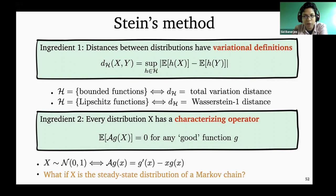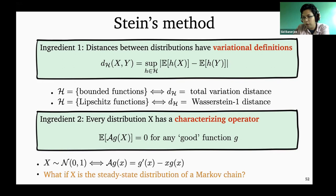In some sense, this is like a signature for a normal distribution. If you had a distribution and didn't know it was normal, and then threw it into this operator for any function G and saw that the result was zero, then you would know you have a normal distribution. What people usually do in Stein's method is take different distributions and find this kind of characterizing operator. So the natural question is: for a steady state distribution of any Markov chain, what is the characterizing operator?